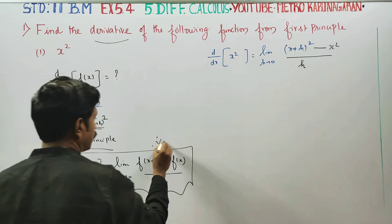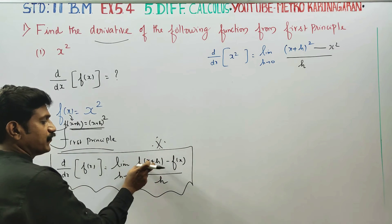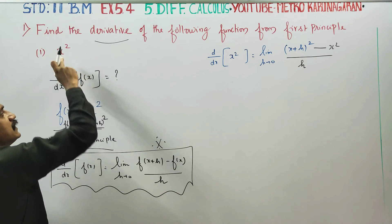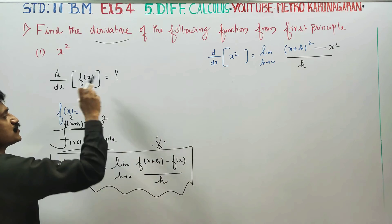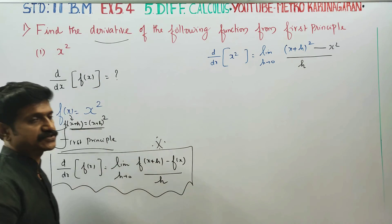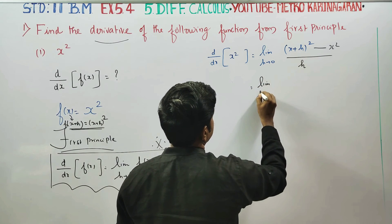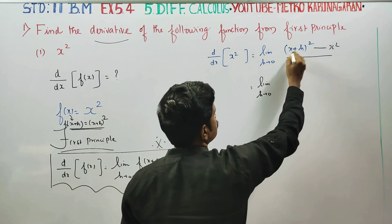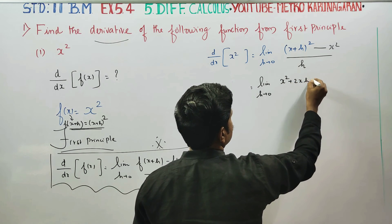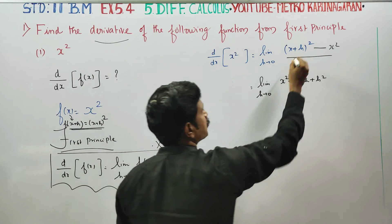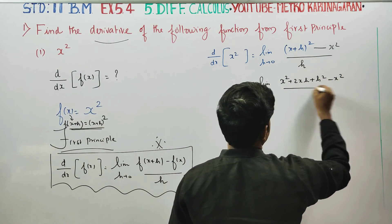This is the formula. I will substitute: f of x plus h is x plus h all squared, minus f of x which is the original x squared, divided by h. Now, what is a plus b all squared? It equals a squared plus 2ab plus b squared. Applying this formula: x squared plus 2xh plus h squared, minus x squared, divided by h.